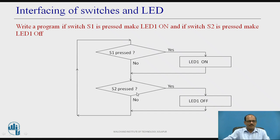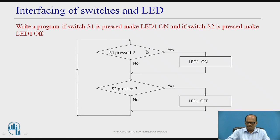This is the flowchart for this programming task. For every programming task, first prepare a flowchart and write the program according to it. The first decision box checks if S1 is pressed — if yes, LED1 is on. If S1 is not pressed, check if S2 is pressed — if yes, LED1 is made off. If S2 is not pressed, continue in a loop, continuously checking S1 and S2.